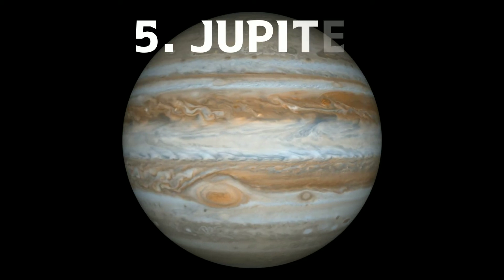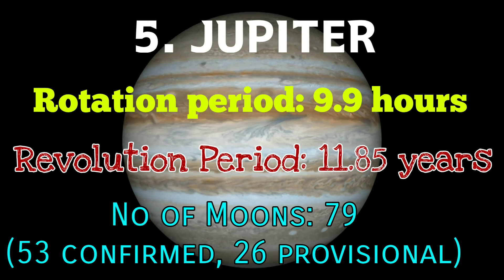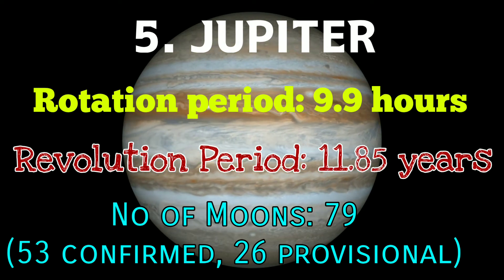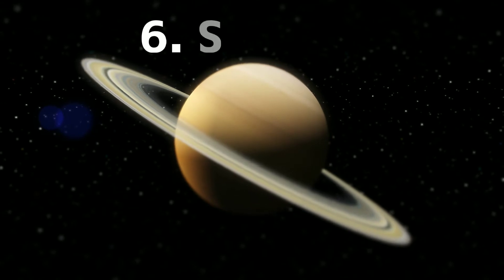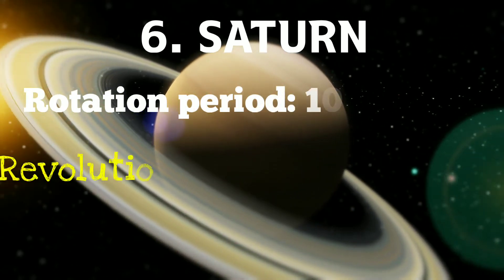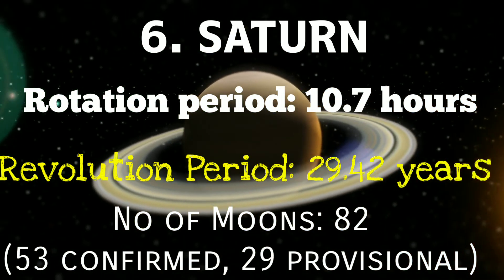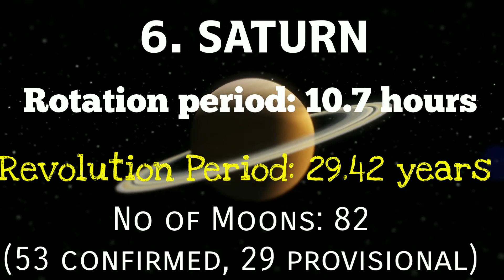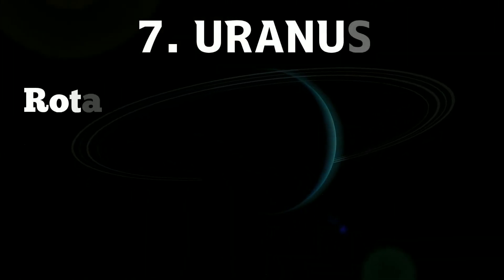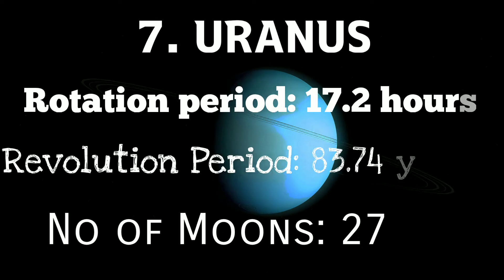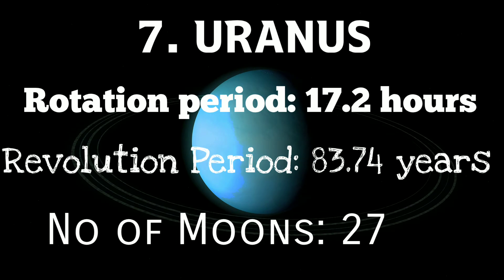Jupiter: Rotation Period 9.9 Hours, Revolution Period 11.85 Years, Number of Moons 79. Saturn: Rotation Period 10.7 Hours, Revolution Period 21.42 Years, Number of Moons 82. Uranus: Rotation Period 17.2 Hours, Revolution Period 83.74 Years, Number of Moons 27.